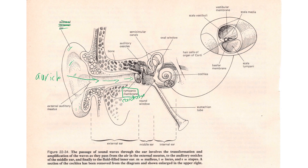Once sound enters and the tympanic membrane is vibrating back and forth like the top of a drum, its vibrations tap against the first bone of the middle ear — the three auditory ossicles: the hammer, the anvil, and the stirrup, also known as the malleus, the incus, and the stapes. The stapes is the smallest bone in the body, and all three of these bones fit on the face of a penny.